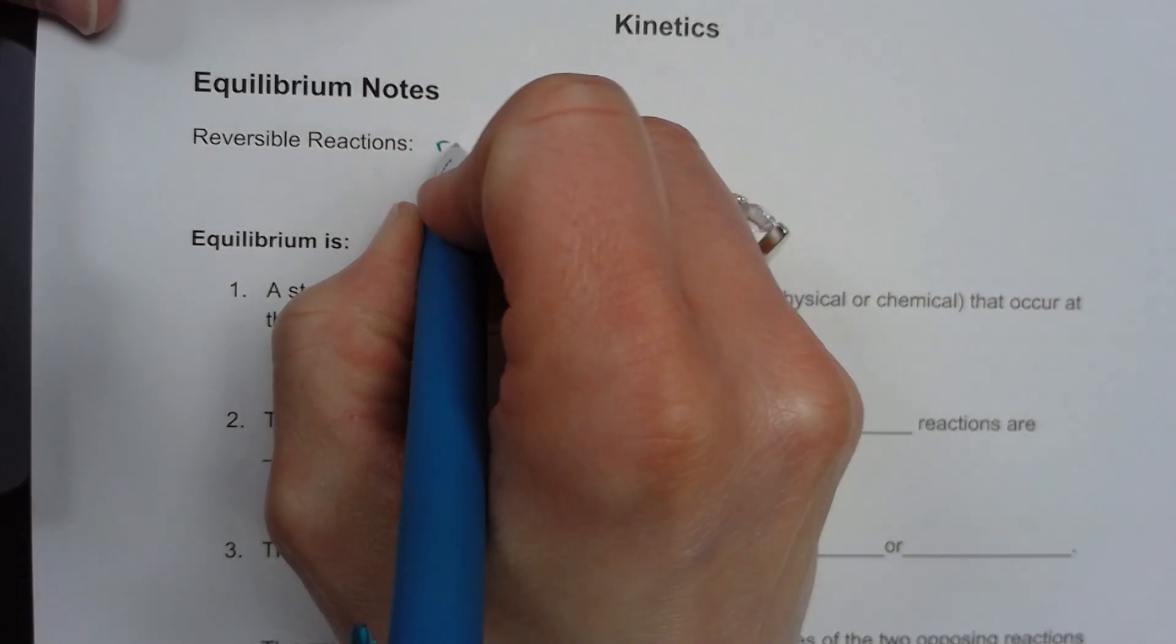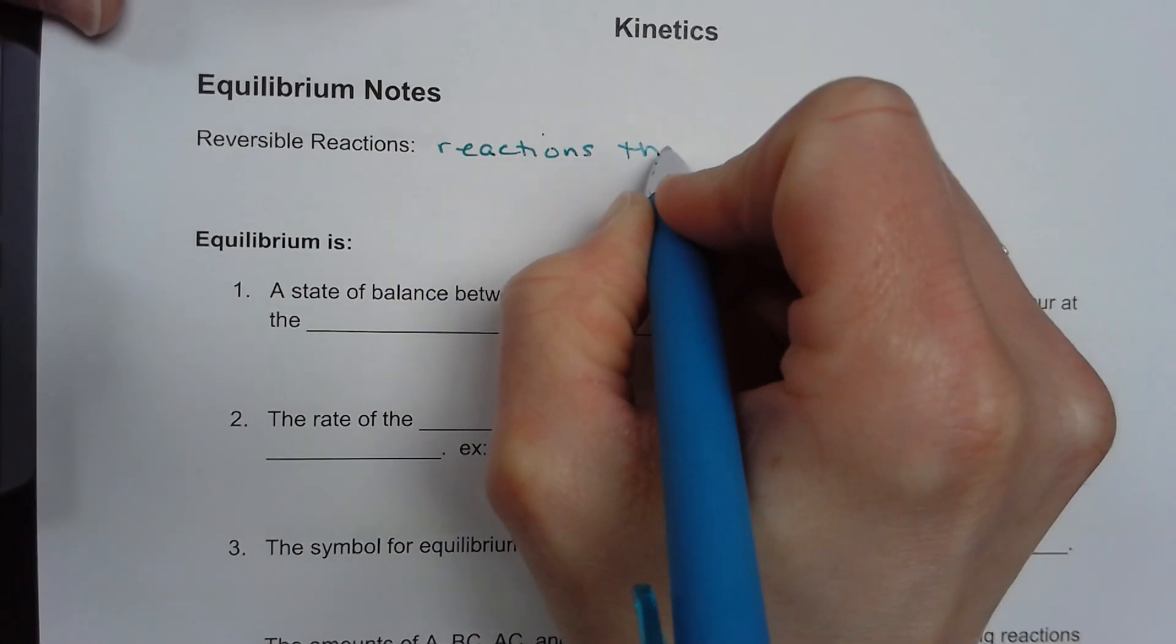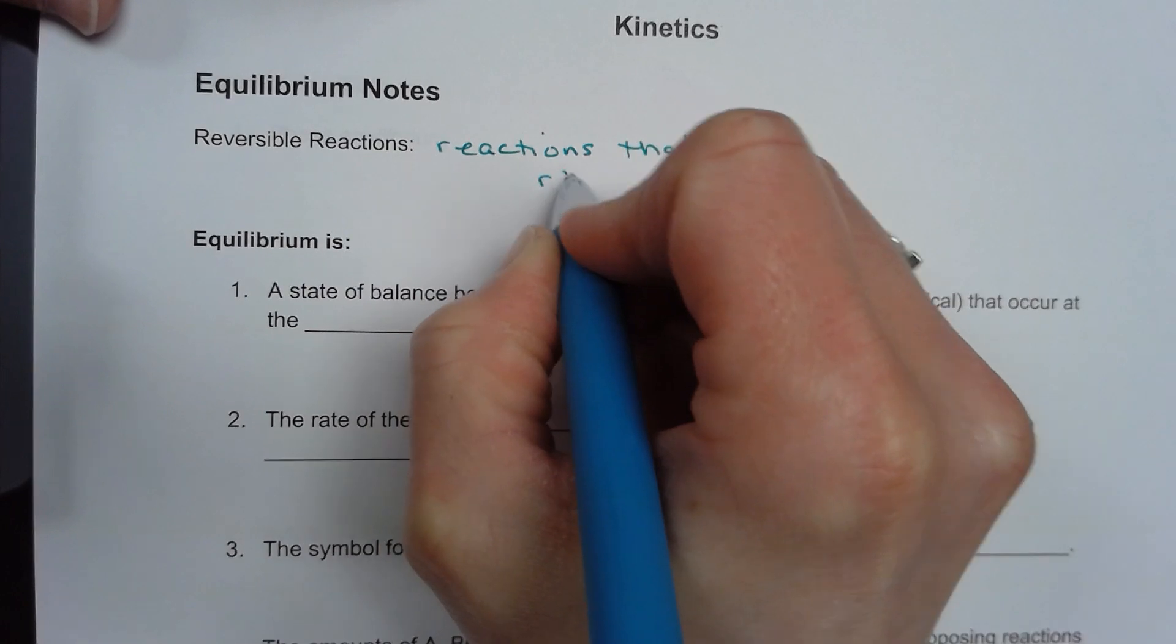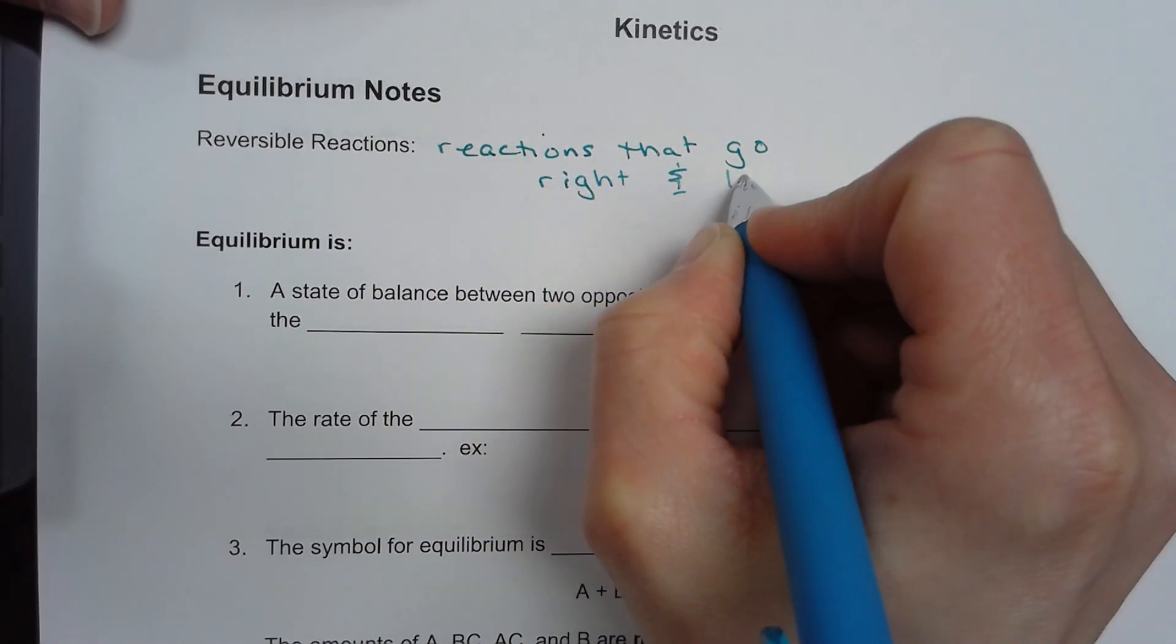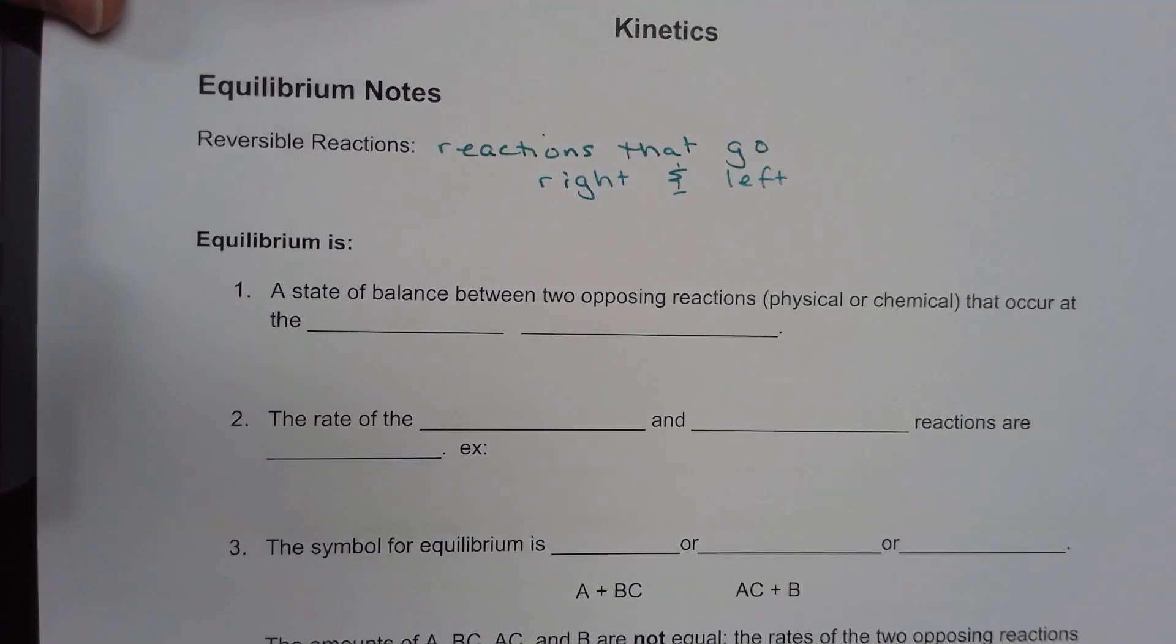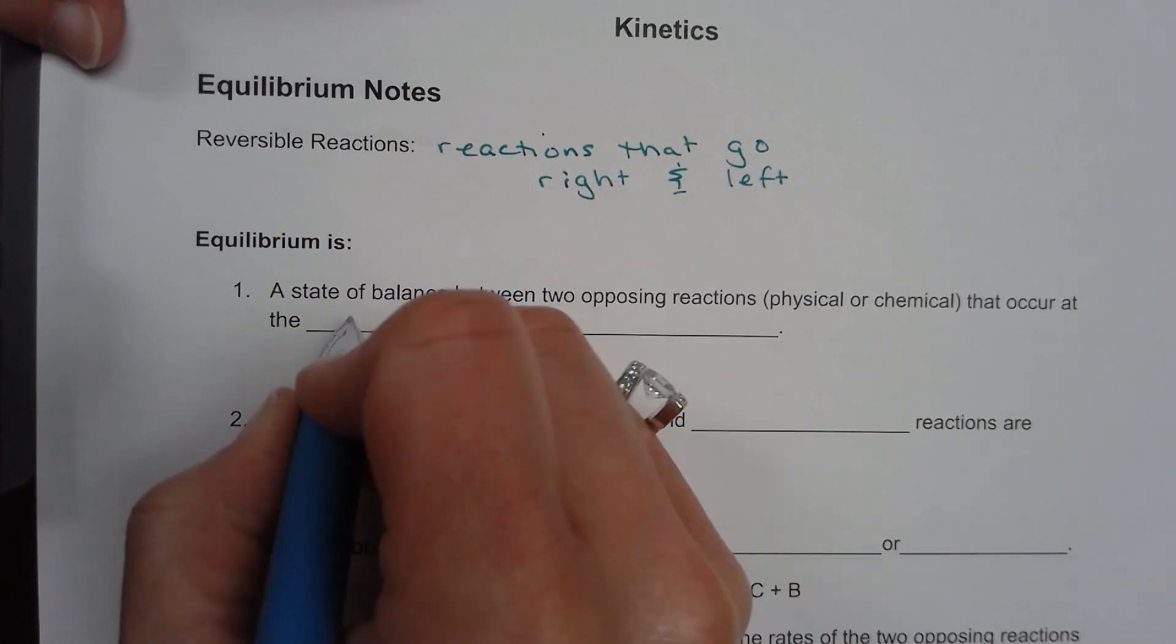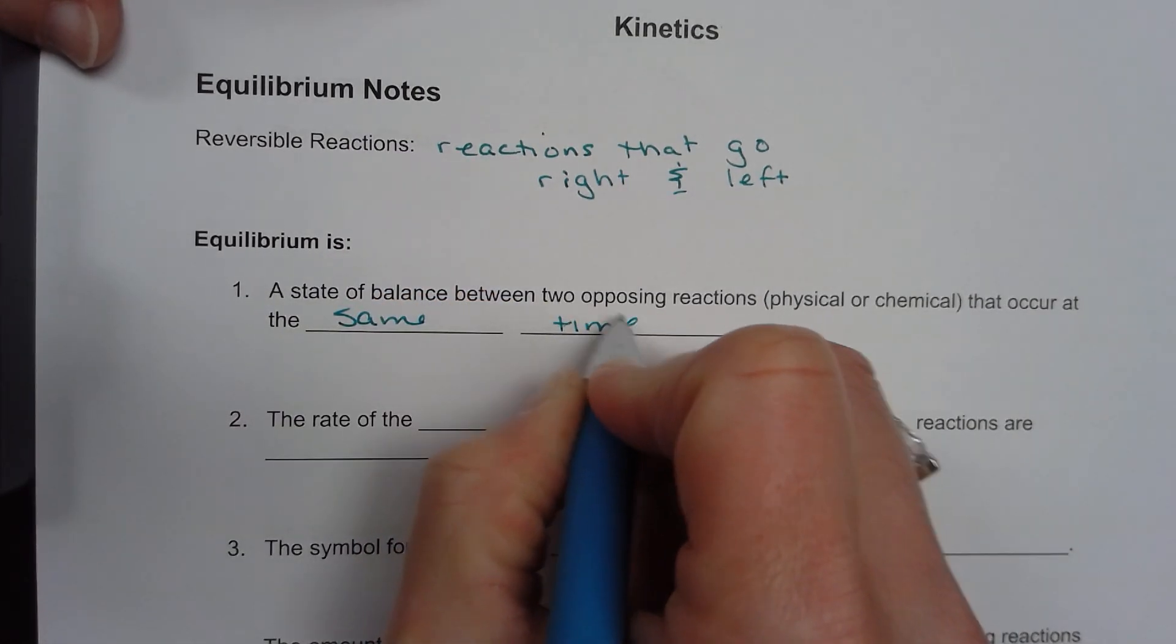These are reactions that go right and left. They go both directions. It's a state of balance between two opposing reactions that occur at the same time. These are happening simultaneously.